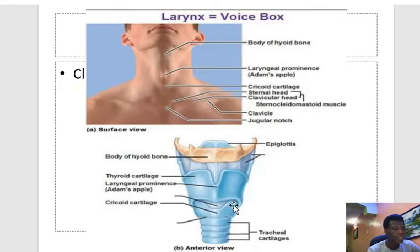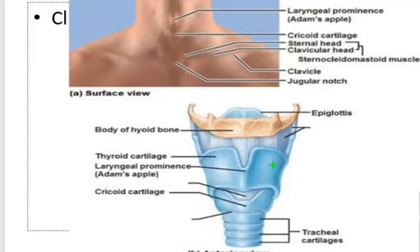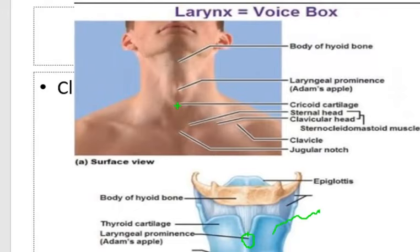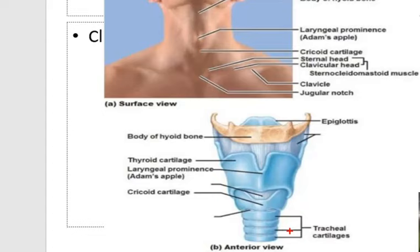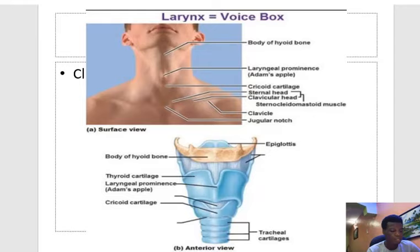Let's move down to the larynx and the laryngeal cartilages. There are two very important ones: the thyroid cartilage on top, and then the cricoid cartilage. The thyroid cartilage is very important and has this prominence called the laryngeal prominence, otherwise known as the Adam's apple — a projection often painted in steeplechase. Inferior to the thyroid cartilage is the cricoid cartilage, which actually does form a complete ring.